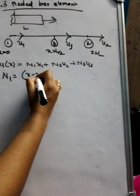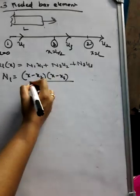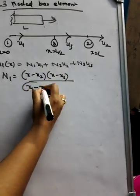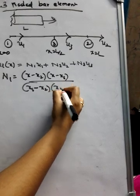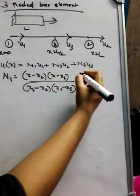N1 would be equal to (x - x2)(x - x3) divided by (x1 - x2)(x1 - x3). Now, substitute the values of x2 here.